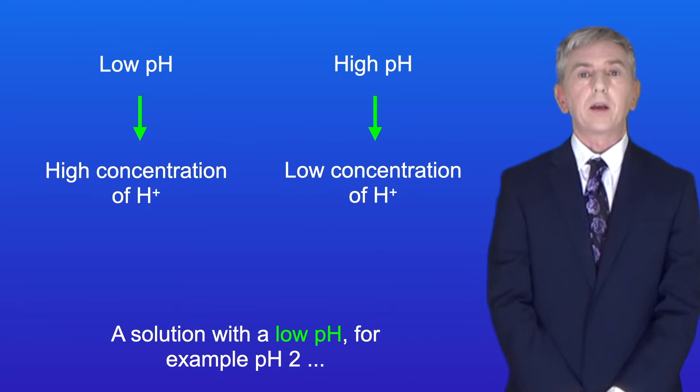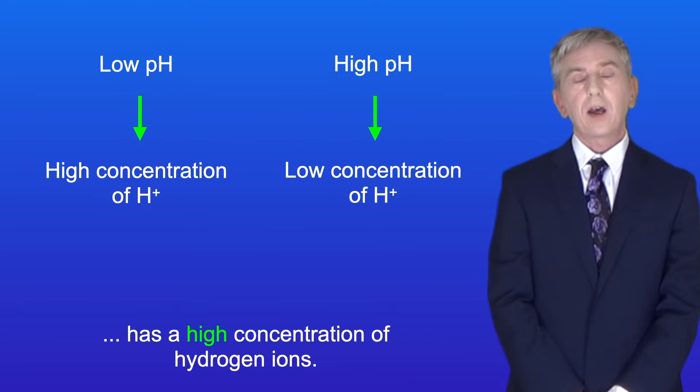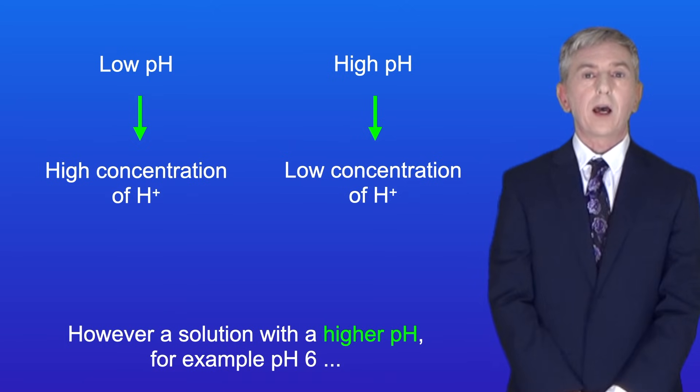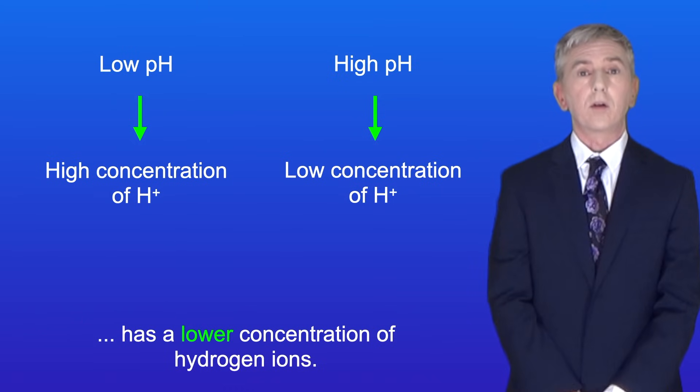A solution with a low pH, for example pH 2, has a high concentration of hydrogen ions. However, a solution with a higher pH, for example pH 6, has a lower concentration of hydrogen ions.